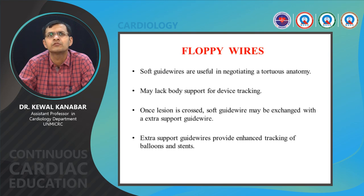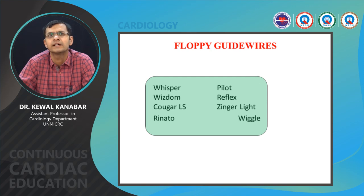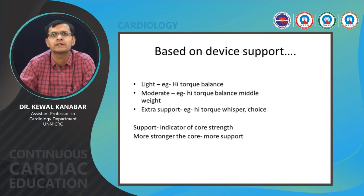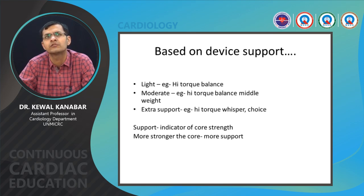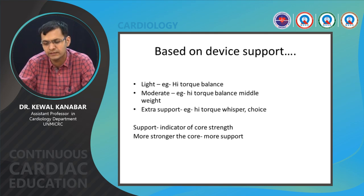Floppy wires are useful for negotiating tortuous anatomy but lack support for device tracking. Once a lesion is crossed, you can exchange these wires via micro catheter for a super extra support or extra support wire. Floppy guide wires like the Pilot wire and Whisper wire have very low tip load and polymer coating with small risk of perforation. Based on support, wires divide into light, moderate, and extra support. Support depends on core strength — the stronger the core, the better the support.